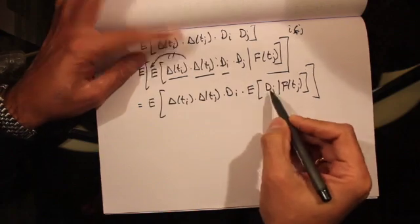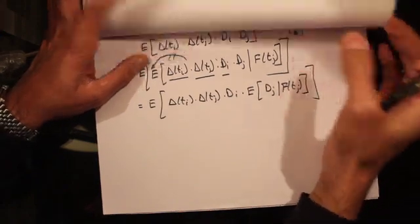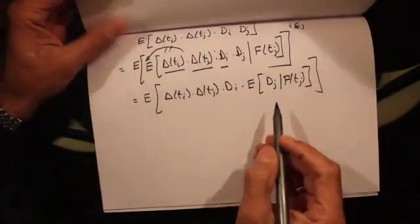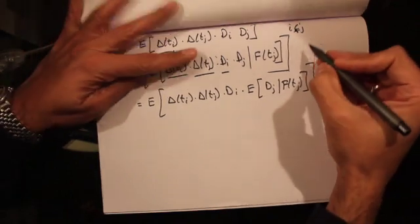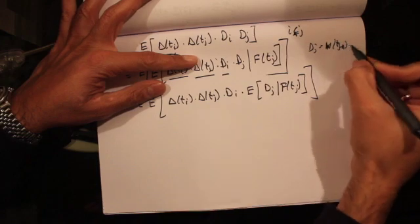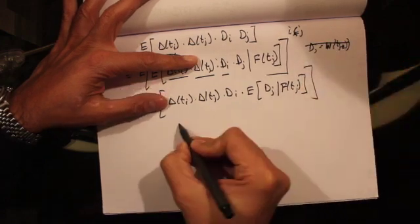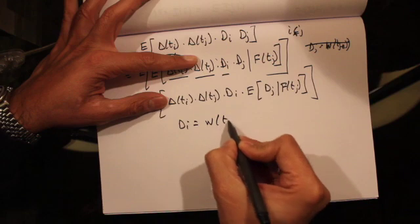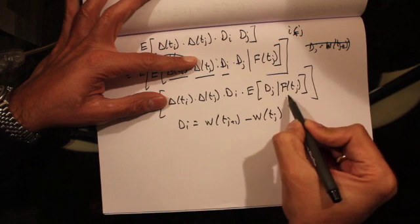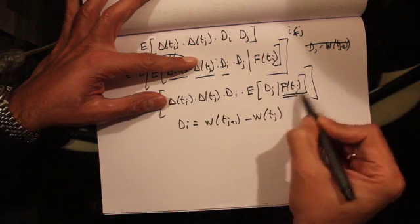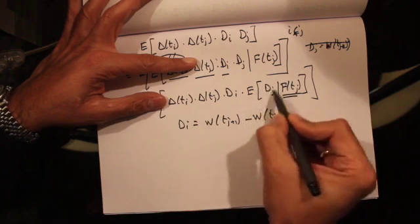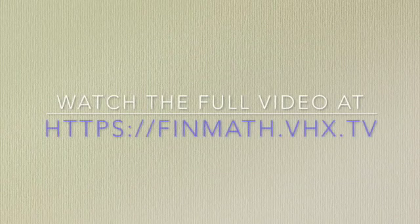Now, what is d_j? As just stated, d_j is an increment of Brownian motion: d_j = W(t_{j+1}) − W(t_j). This increment is independent of the information available in F(t_j). Because of this independence, the conditional expectation E[d_j | F(t_j)] equals zero.